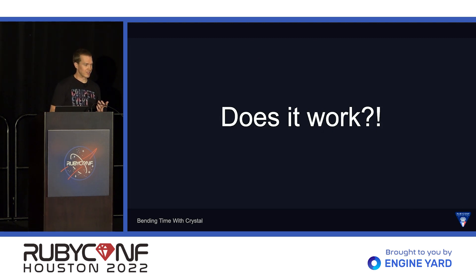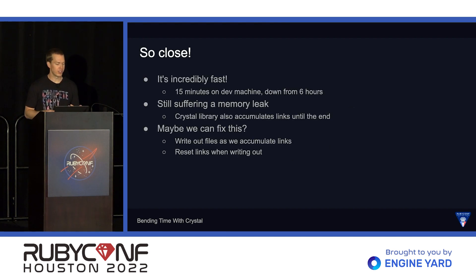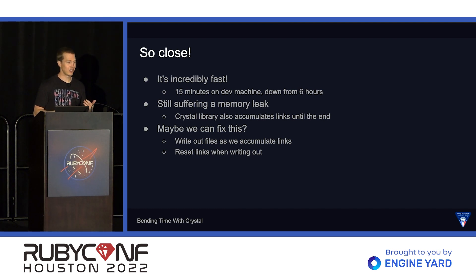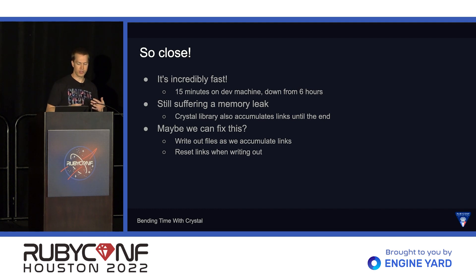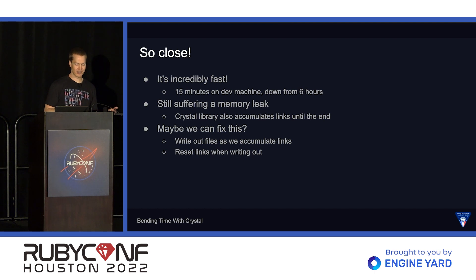So after all of this, does it actually work? Yes, it does — there is a caveat, but let's look at the results. The first thing we discover is it's incredibly fast. Working with those same 18 million records, it finishes in about 15 minutes. This is a huge improvement from the six hours we're used to. This means it's a viable idea we can continue to work on and fine-tune. However, it does suffer from the same memory leak as the Ruby version — the Crystal library also accumulates all the links until the end of the processing block. And in fact, finding this here made me realize it and go find it in the Ruby gem itself.